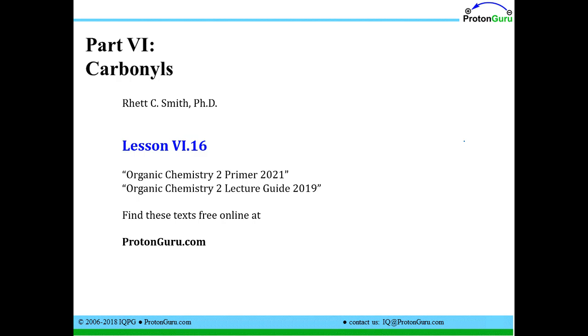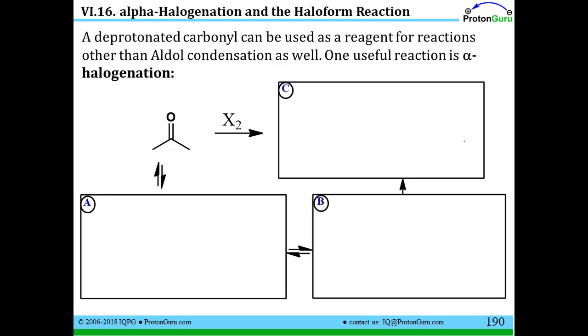Welcome back, everyone. I'm Professor Rhett Smith for ProtonGuru.com. We're going to go over Lesson 6.16 in the Organic Chemistry 2 Primer today. And the subjects for today's lesson are alpha halogenation and the haloform reaction, two reactions that involve addition of species to the alpha position of a carbonyl.